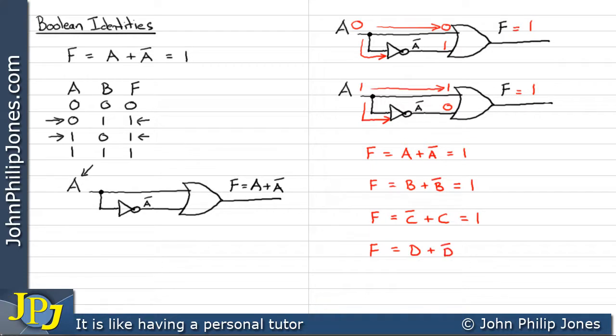You see, if D is a one it means NOT D is a zero, and if D is a zero it means NOT D is a one. So we will always have at least one one present and that's sufficient to give us a one at the output.